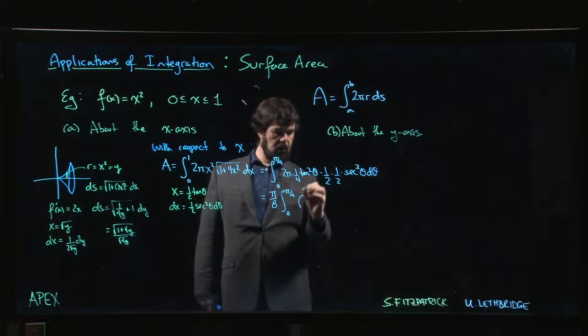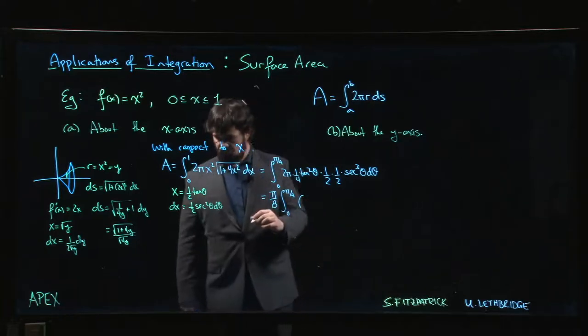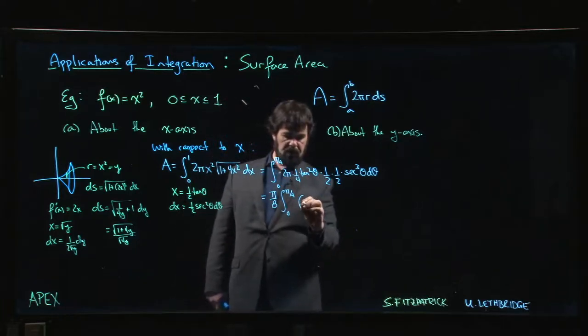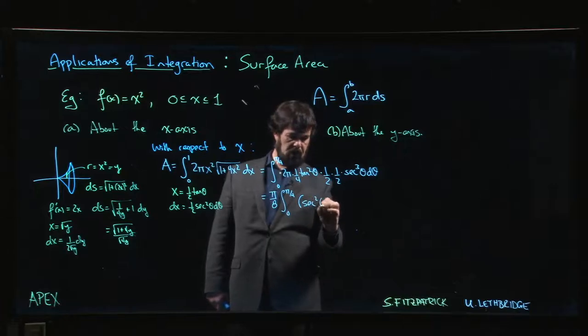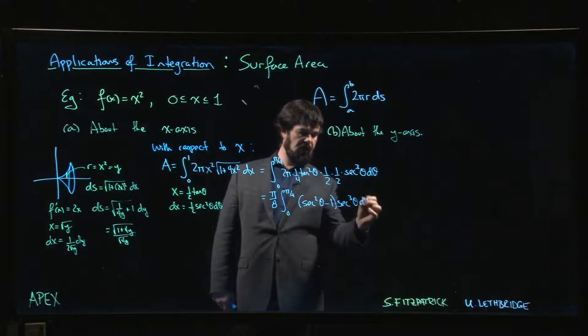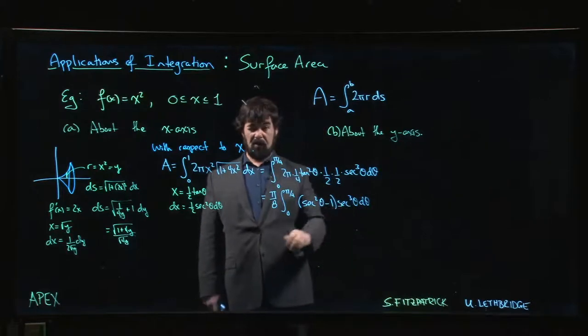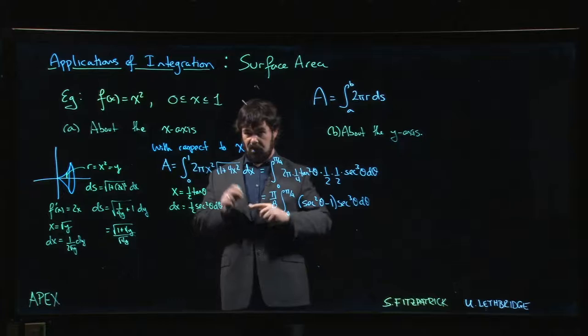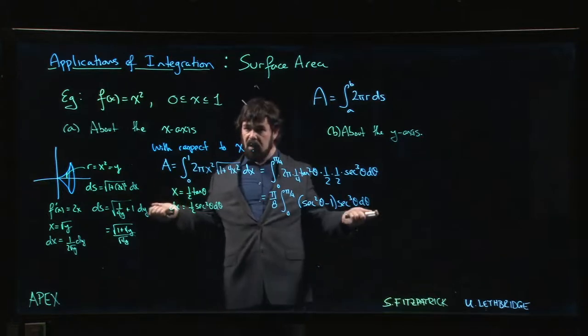The only way to deal with tan squared times secant cubed is to write tan squared as secant squared θ minus 1. That gives us secant cubed, so we get a secant fifth minus secant cubed. Those are two very unpleasant trig integrals. They're doable, we've done them.